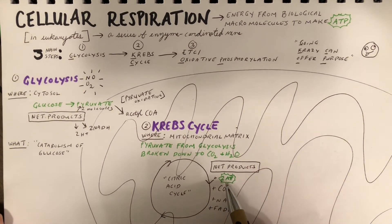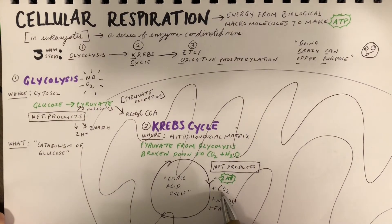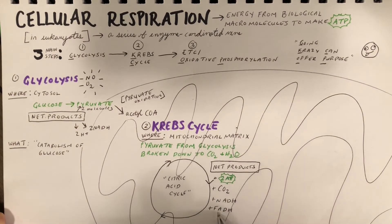For now, all you need to know is that it's a cycle and what comes out of it. This part of the process also generates a little ATP, carbon dioxide like we already talked about, NADH, and FADH2.